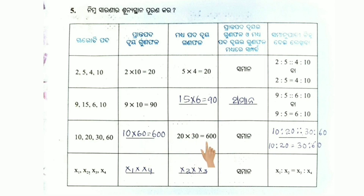x1 into x4 equals x2 into x3. So how do we get x1 into x2 into x4?